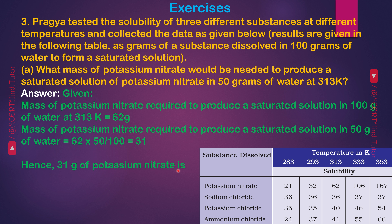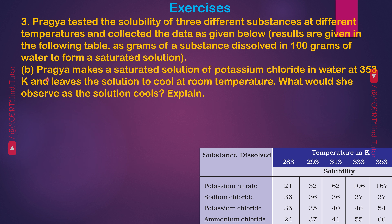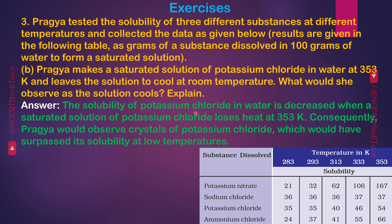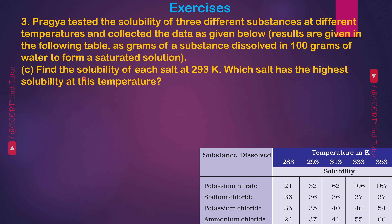Hence 31 grams of potassium nitrate is required. B — Pragya makes a saturated solution of potassium chloride in water at 353 Kelvin and leaves the solution to cool at room temperature. What would she observe as the solution cools? The solubility of potassium chloride decreases when the saturated solution loses heat; consequently, Pragya would observe crystals of potassium chloride forming as they surpass solubility at lower temperatures.